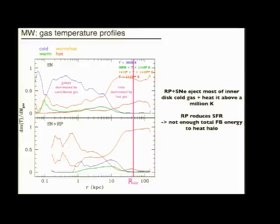Most of this gas has either flowed out or been heated up, and we also see that there's no million degree gas in the halo. So this refers to the inability of radiation pressure to heat the gas in the halo due to not having enough total feedback energy due to the suppressed star formation.